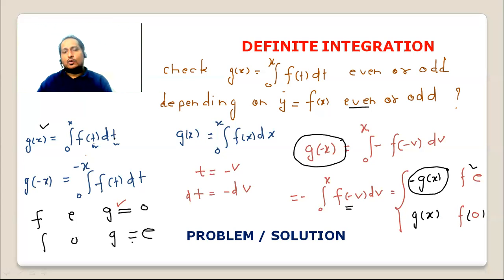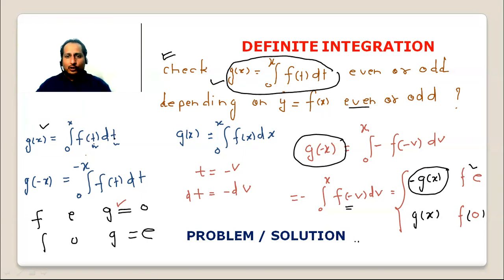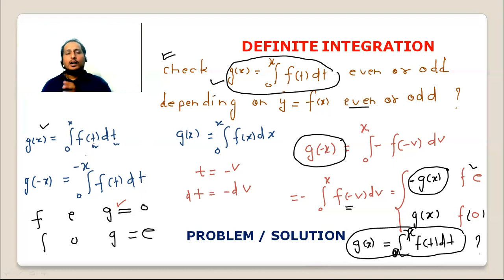यह काफी अच्छा problem है और जो process है वो भी समझ में आ चुका है। ध्यान रखना — यह problem मैंने discuss किया जहाँ lower limit 0 है। एक assignment दे रहा हूँ: g(x) = integral from a to x of f(t) dt, जहाँ a एक non-zero number है — इसका even या odd nature find करें depending on nature of f(x)। जब f even होगा तो g(x) odd होगा, और f odd होगा तो g(x) even होगा।